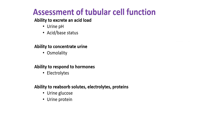Looking at the assessment of tubular cell function: this includes the ability to excrete an acid load, assessed via urine pH and acid-base status; the ability to concentrate urine, assessed via osmolality; the ability to respond to hormones, assessed via electrolytes; and the ability to reabsorb solutes — electrolytes and proteins — assessed via urine glucose and urine protein.